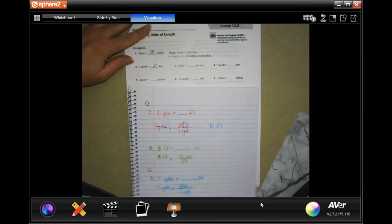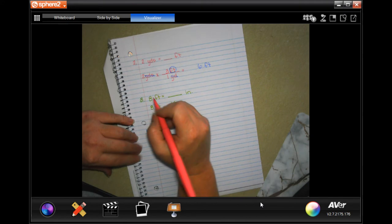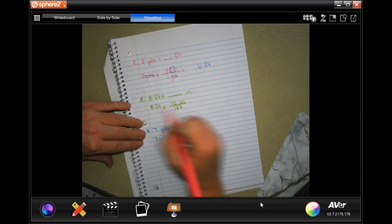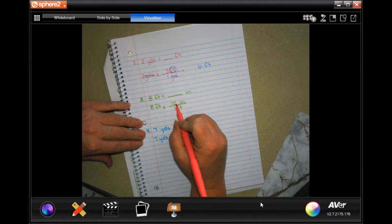I'm going to show you again. It says 8 feet is how many inches? Well, 8 feet, and in 1 foot, there's 12 inches. So all I did is this is the conversion. 1 foot is 12 inches.